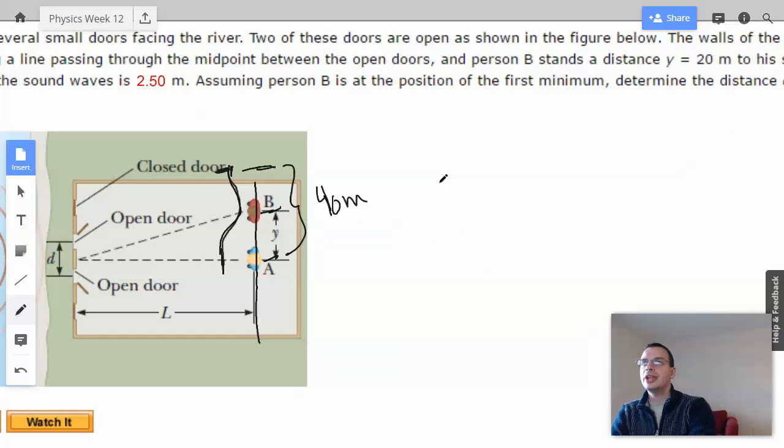Let's throw out the formula and see what happens. Y, which is the distance to a maximum, equals M wavelength, big D, for distance, in this case it's going to be L, and small d.